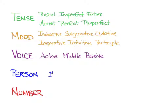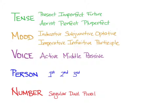You also know that Greek uses first, second, and third person, just like English. And it has singular, dual, and plural numbers, unlike English, which doesn't have dual. But you also know that we don't use dual very much, so we're not bothering to learn it right now.